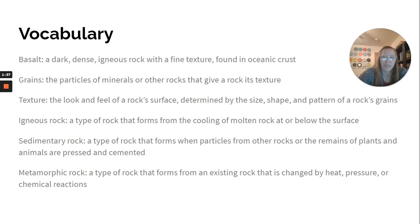Basalt: a dark, dense igneous rock with a fine texture found in oceanic crust. Grains: the particles of minerals or other rocks that give a rock its texture. Texture: the look and feel of a rock's surface determined by the size, shape, and pattern of a rock's grains.